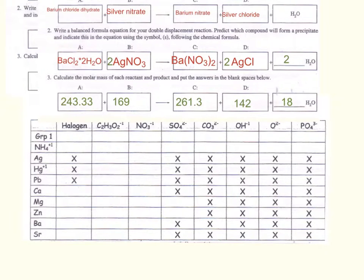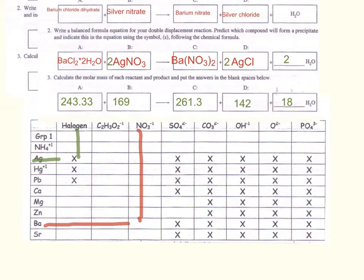Going back to our original problem — how would you prepare 2 grams of precipitate by reacting barium chloride dihydrate with silver nitrate — we must now determine which of our two products will be the precipitate. To do so, we will use the solubility chart shown below. On this chart, X's represent soluble substances that go into solution, and the open areas represent those that become precipitates. We're going to look at barium nitrate and silver chloride to determine which one is the precipitate.